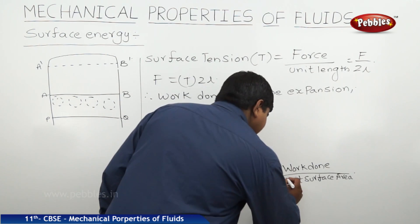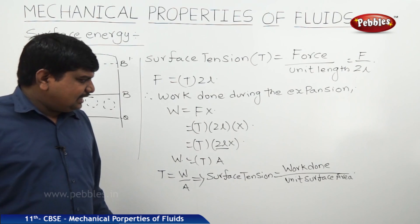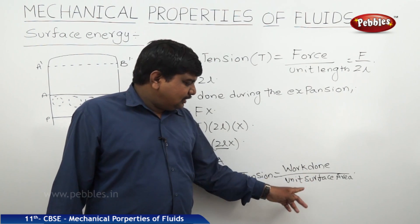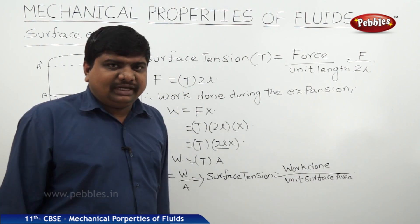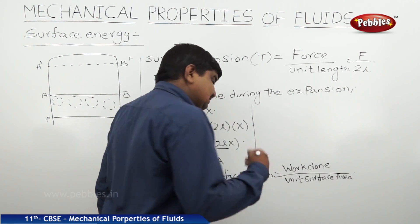So what we can write: Surface tension is also defined as the amount of work done on unit surface area of the fluid element. By this expression, the units of surface tension are also changed.